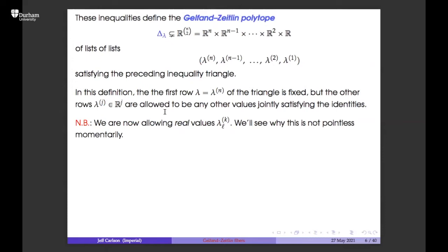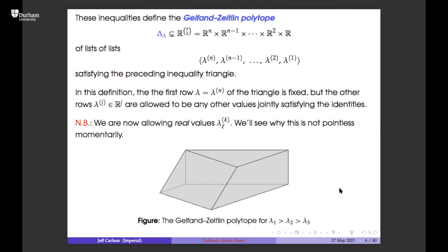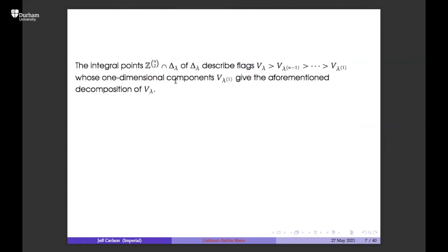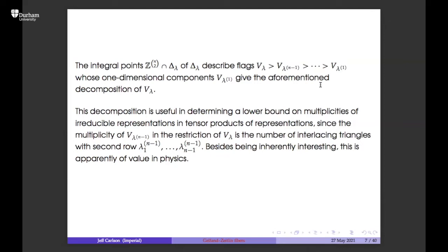In this definition for the polytope, the first row is fixed but the subsidiary rows are any values satisfying these triangular inequalities. The integral points of this polytope describe flags giving the representations and this decomposition allows you to determine multiplicities of irreducible representations in tensor products, because the multiplicity is given by the number of interlacing triangles with the given second row.